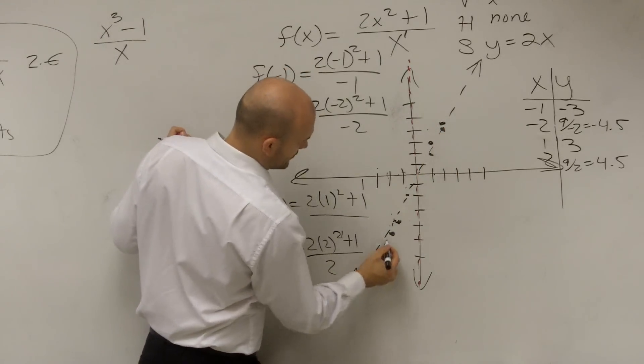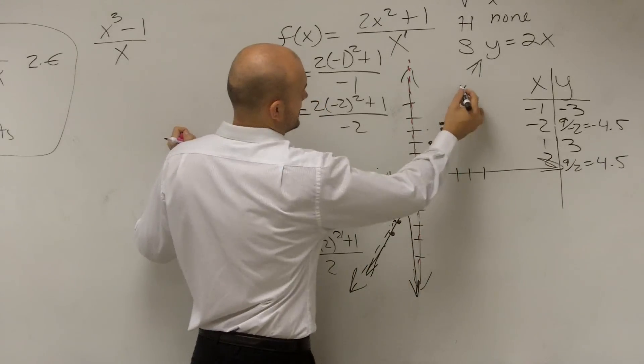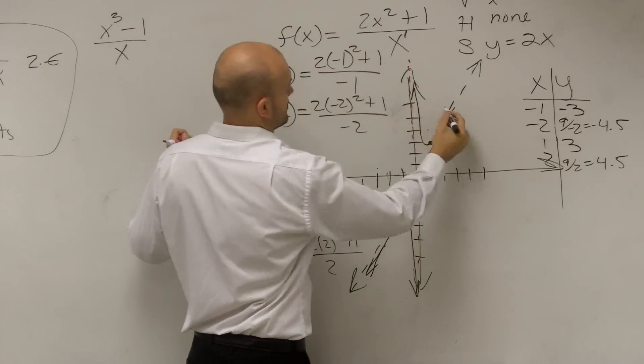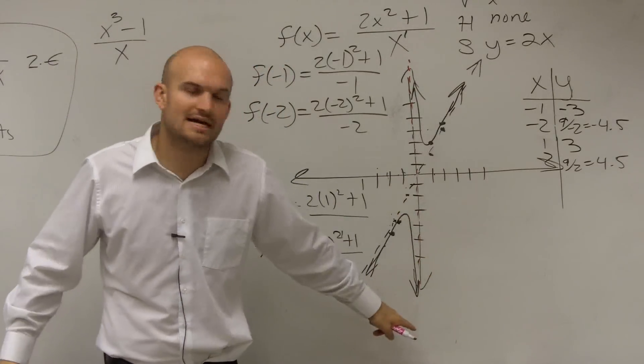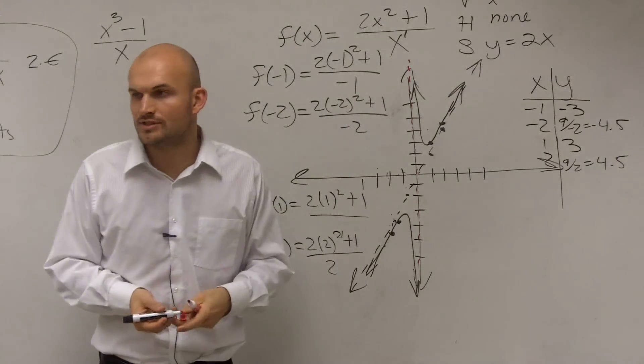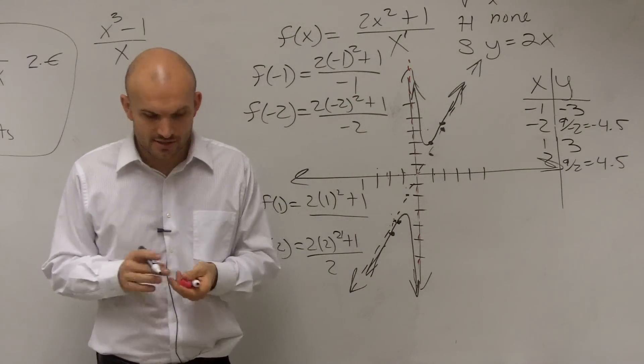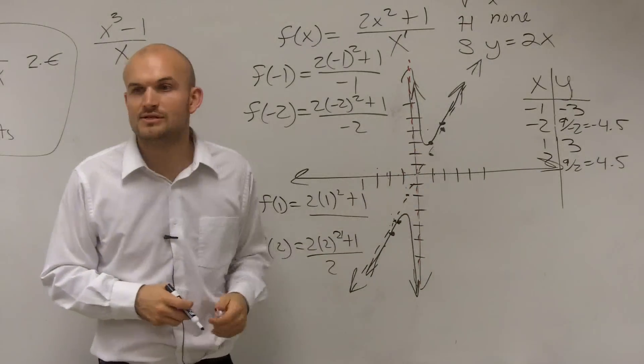So what you guys are going to notice when you graph this, your graph is going to look something like this. It approaches your slant and your vertical asymptote. It approaches this slant and vertical asymptote, but it's never going to cross them over. So that's why we don't have an x-intercept or an f of x-intercept.